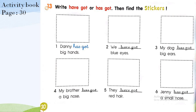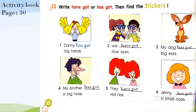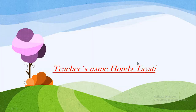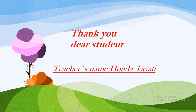Well done, students! Now let me give you the answers. Danny has got big hands. We have got blue eyes. My dog has got big ears. My brother has got a big nose. They have got red hair and Jenny has got a small nose. Make sure you do this exercise and stick the stickers in your activity book.